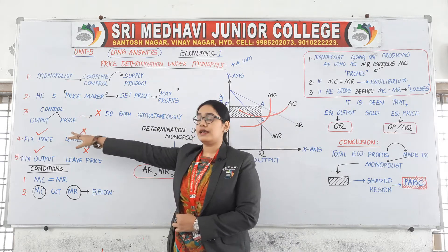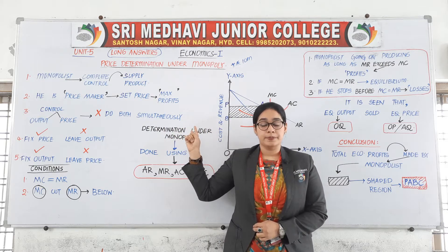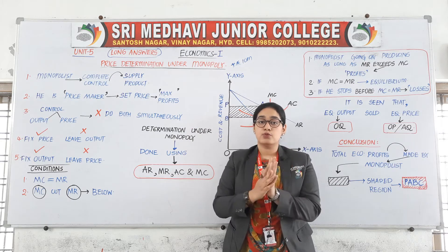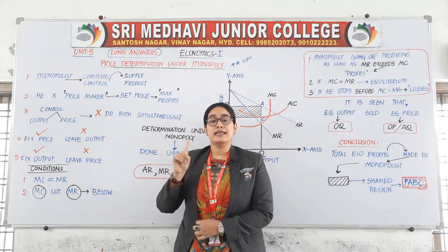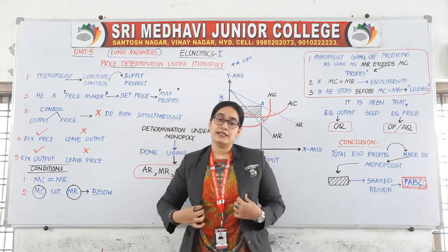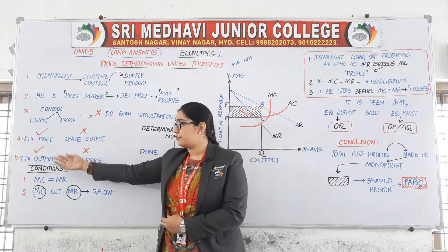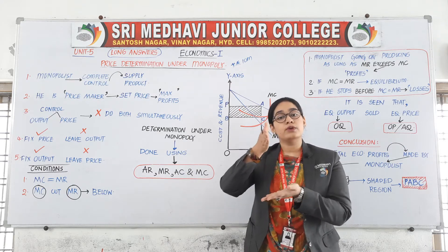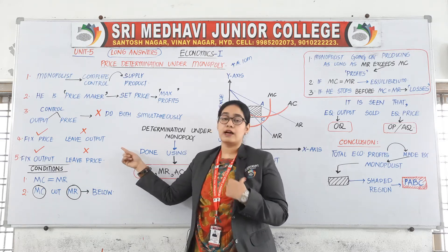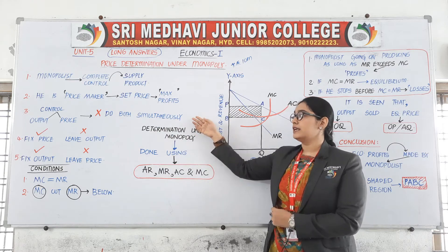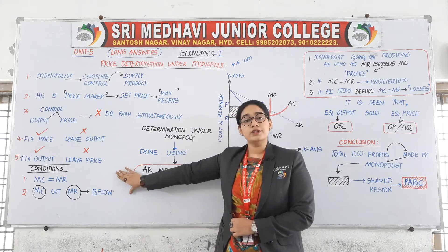The third point: he can control either output or price, but he cannot control both simultaneously. He can control only one thing at one time. At one particular period of time, he can fix either the price and leave the output, or fix the output and leave the price. He cannot control both price and output at the same time. Now there are two conditions for monopoly.